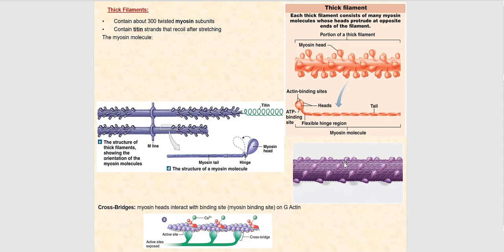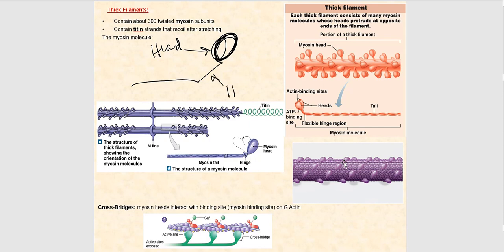Myosin is the protein that makes up the thick myofilaments, also referred to as thick filaments. Myosin is made up of three parts: the head, the hinge, and the tail. The hinge is flexible, sort of like a hinge on a door. So once again: head, hinge, and tail — that's all part of myosin.